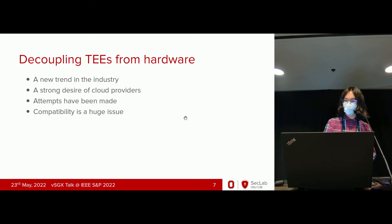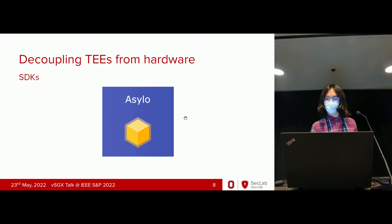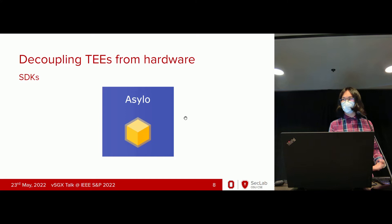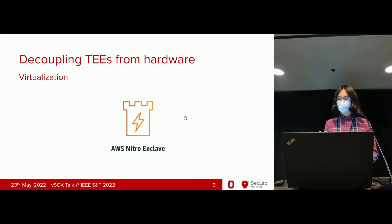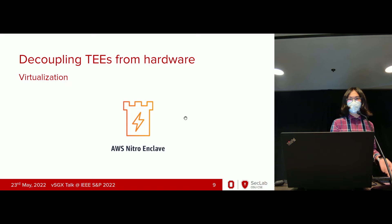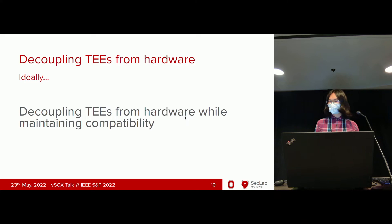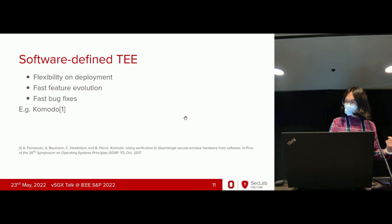We also find a new trend in the cloud industry: decoupling TEE from hardware. There's a strong desire from cloud providers, and we see a lot of attempts, but compatibility is a huge issue. For example, Google Asylo is an SDK-level attempt to implement this, a unified SDK that if you write an app for it, it adapts to real hardware TEE — but you have to rewrite your app. We also see AWS Nitro Enclave that virtualizes the enclave using hypervisor technologies, but again you have to rewrite your app.